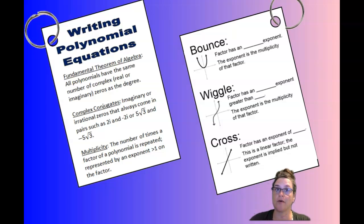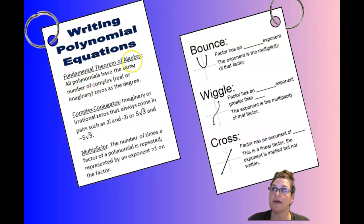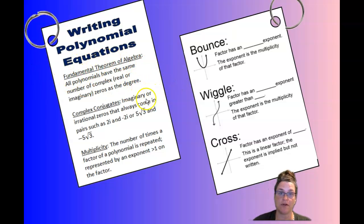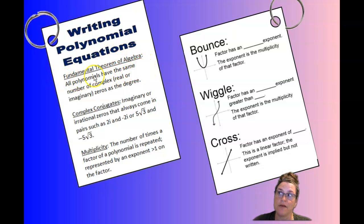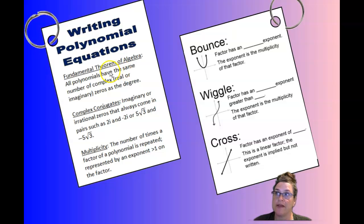Welcome to our notes for writing polynomial equations. On the front, we've got some vocabulary we want to go over together. The Fundamental Theorem of Algebra states that all polynomials have the same number of complex zeros as the degree. This is review from algebra 2, so you should have learned this fundamental theorem of algebra then.